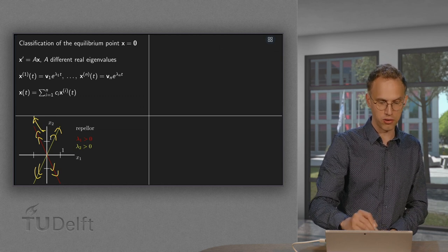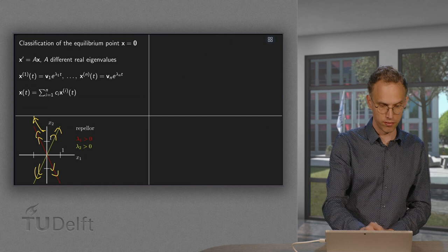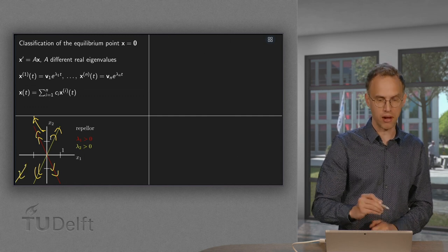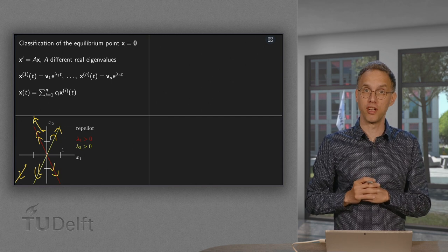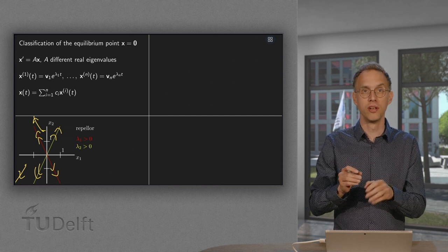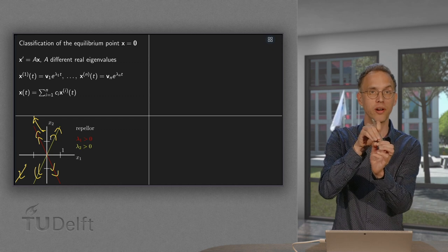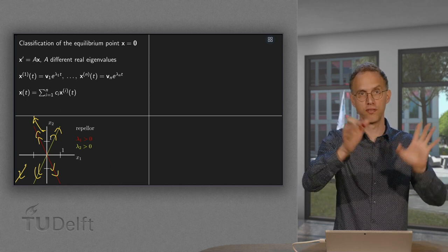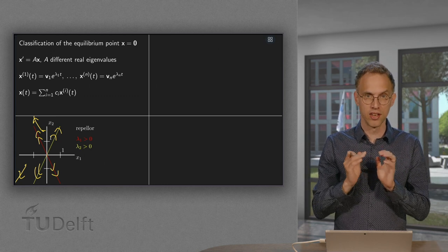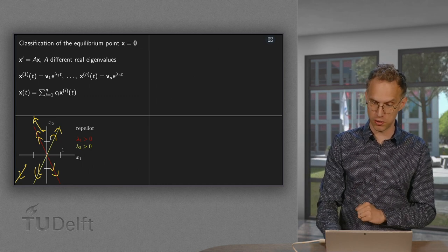you will also go out somehow, like that. Or if you are here, you will also go out. Everything is pushed away. Such an equilibrium point is therefore called a repeller and unstable. No matter how close you are to your equilibrium point, you will always be pushed away and will go to infinity eventually. So that's one possibility.